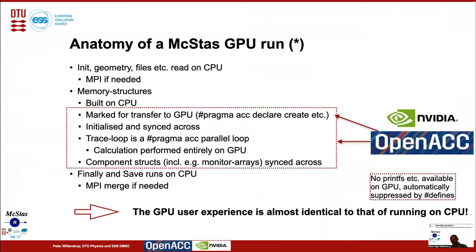So how does it actually feel when you run a GPU simulation with McStas? The whole initialization — defining the geometry, reading files from disk, etc. — works exactly the same as on CPU, because it takes place on the CPU as usual. Memory structures are built on the CPU and then marked for transfer to the GPU, where the whole ray-tracing simulation of the neutrons takes place. At the end, we collect the monitor arrays from the GPU, and these are saved exactly as in a normal CPU simulation. The GPU experience is quite transparent — it feels exactly like running on a CPU, but you may run faster.